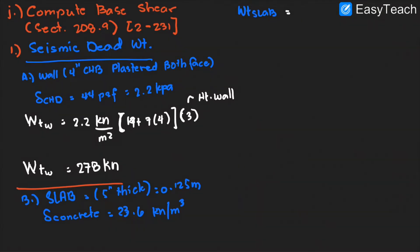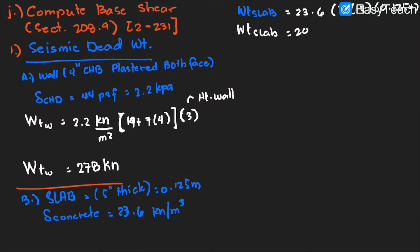The weight of the slab equals the density of concrete (23.6 kN/m³) times the dimension of 7 by 14 meters times the thickness of 0.125 meters. The weight of the slab is equal to 289.1 kilonewton, which we round to 290 kilonewton.